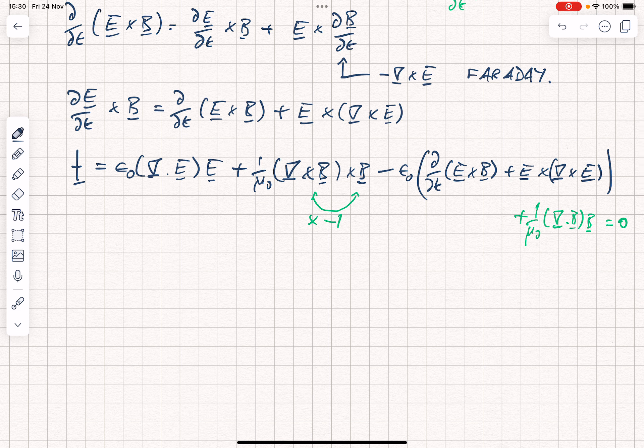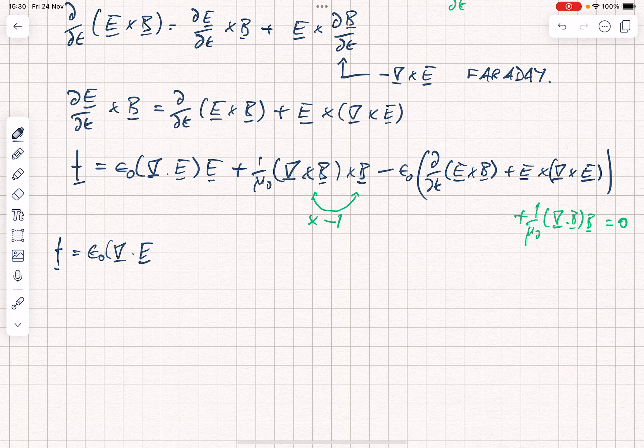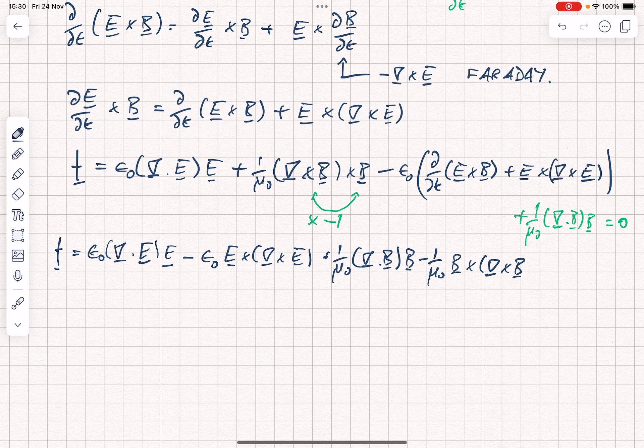So once we've done all of that, let's look at what we've got. We have f equals epsilon 0 div E minus epsilon 0 E crossed with curl E plus 1 over mu naught div B times B minus 1 over mu naught B crossed with curl B minus epsilon 0 d by dt of E cross B. And I have just about enough room to fit that in there. So what you should hopefully see now is there's an awful lot of symmetry here. We have two terms in the electric field, two terms in the magnetic field, and then a time derivative of something which is almost but not quite the pointing vector. We can fix that in just a second.